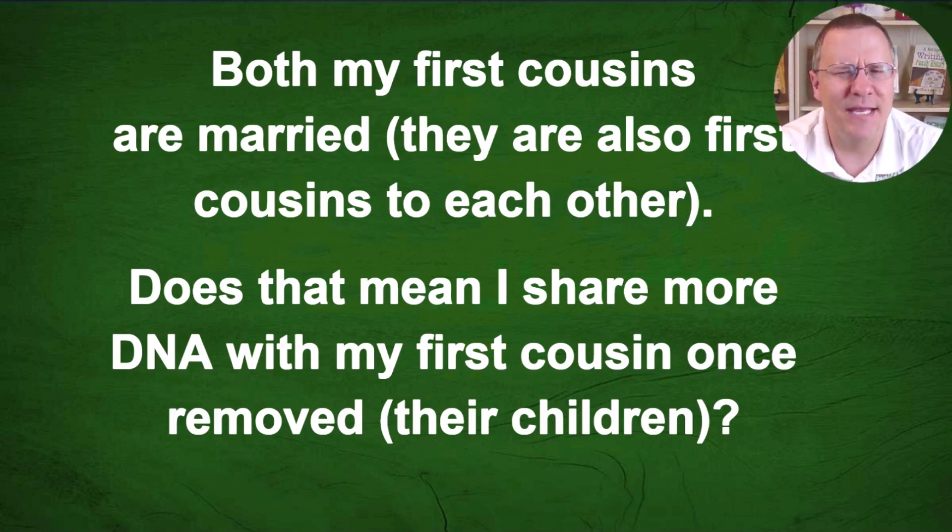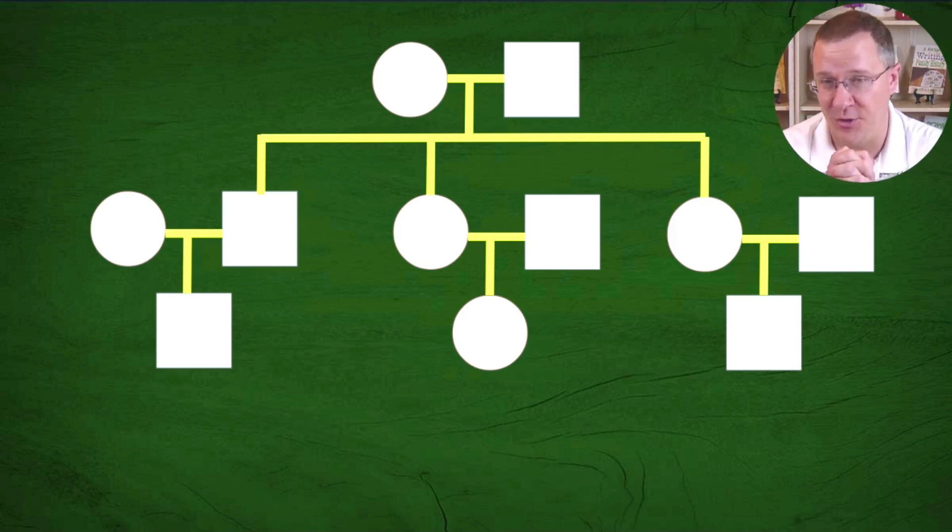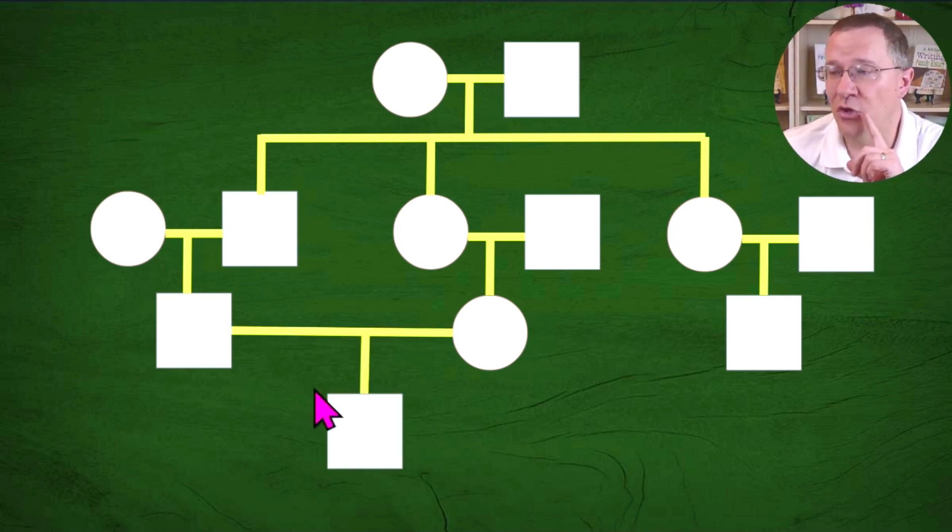Does that mean I share more DNA with my first cousin once removed, their children? I like to draw things out because it helps us visualize it. And so I have it drawn out here. You can see that there's three cousins here, all related to the same set of grandparents. And they happen to have each of their parents are siblings. Two of these cousins married and they have children. So that is what we have here.